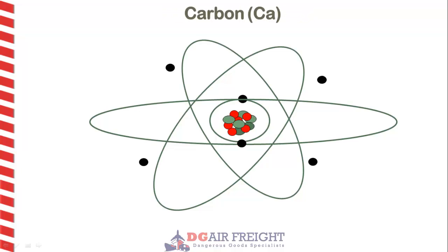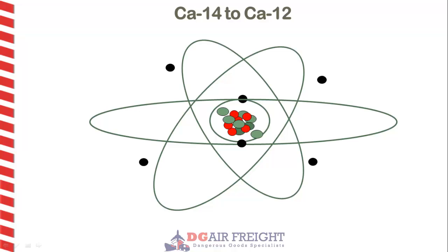A stable carbon atom has 6 protons and 6 neutrons. Its atomic number is 6 and its atomic mass number is 12. A common unstable atom of carbon has 8 neutrons, making its atomic mass number 14, and it is written as C-14, or carbon-14. In order to become stable, the carbon-14 atom must rid itself of extra neutrons, thus releasing energy.